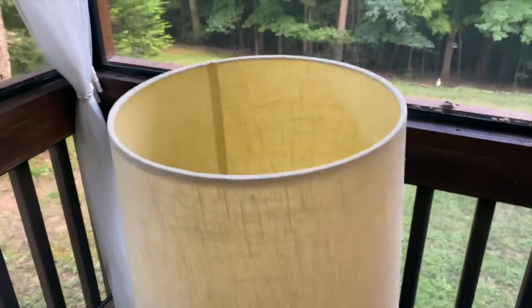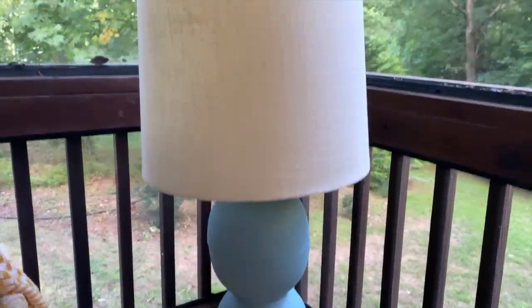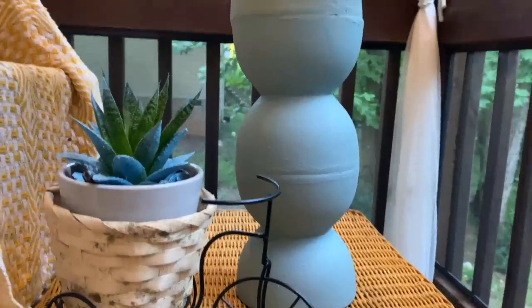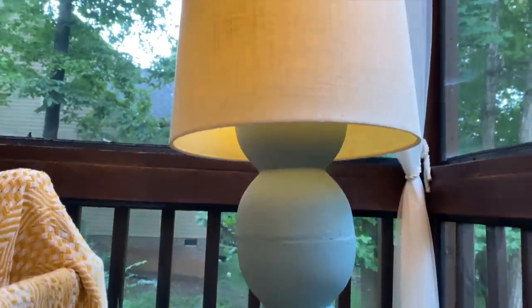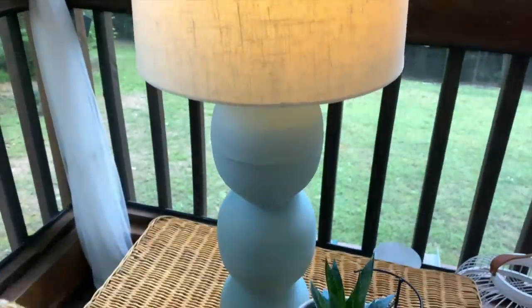And there you have it. Here is my finished DIY cordless solar lamp for my outdoor patio. I hope that you enjoyed this project and feel inspired to try this on your own. I really love how this turned out and it was super simple to make, super easy, and it didn't take a lot of time. So thank you so much for watching Home Talk and I will see you in the next one.